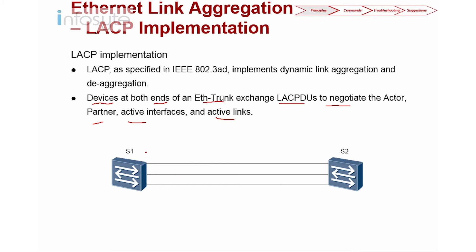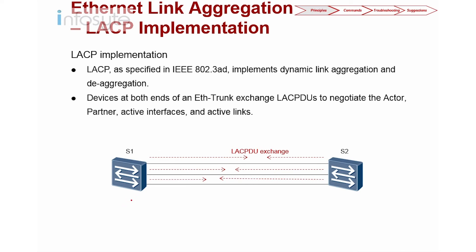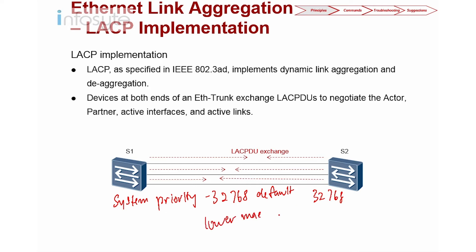Once the EtherTrunk interface is created and LACP is configured on both sides, LACPDU exchange begins. Each device sends its system priority — the default is 32768. If both devices have the same system priority, then the lower MAC address wins, and that device becomes the actor. So if S1 has the lower MAC address, S1 becomes the actor. The actor then looks into the priority of each interface to determine which links are active.